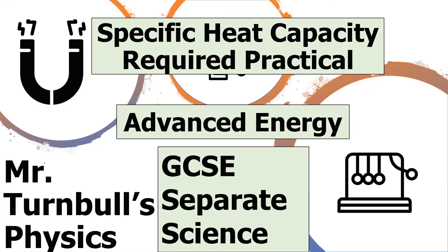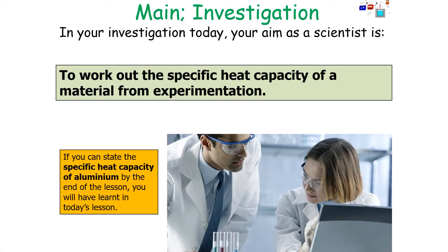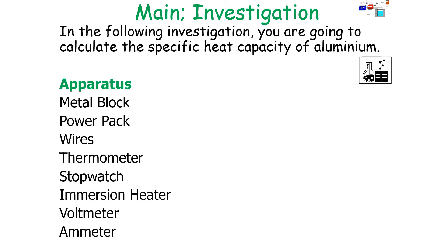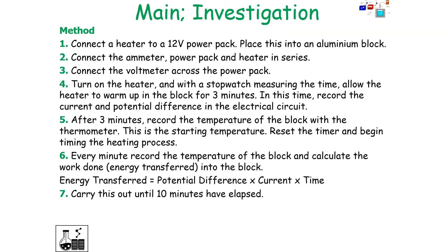The next topic is the specific heat capacity required practical. In this investigation, you need to work out the specific heat capacity of a material from experimentation. You'll need a metal block, a power pack, wires, a thermometer, a stopwatch, an immersion heater, and a voltmeter and ammeter. You connect a heater to a 12-volt power pack placed into an aluminium block, connect the ammeter, power pack, and heater in series, connect the voltmeter across the power pack, turn on the heater, and with a stopwatch measure the time, allowing the heater to warm up for 3 minutes in the block.